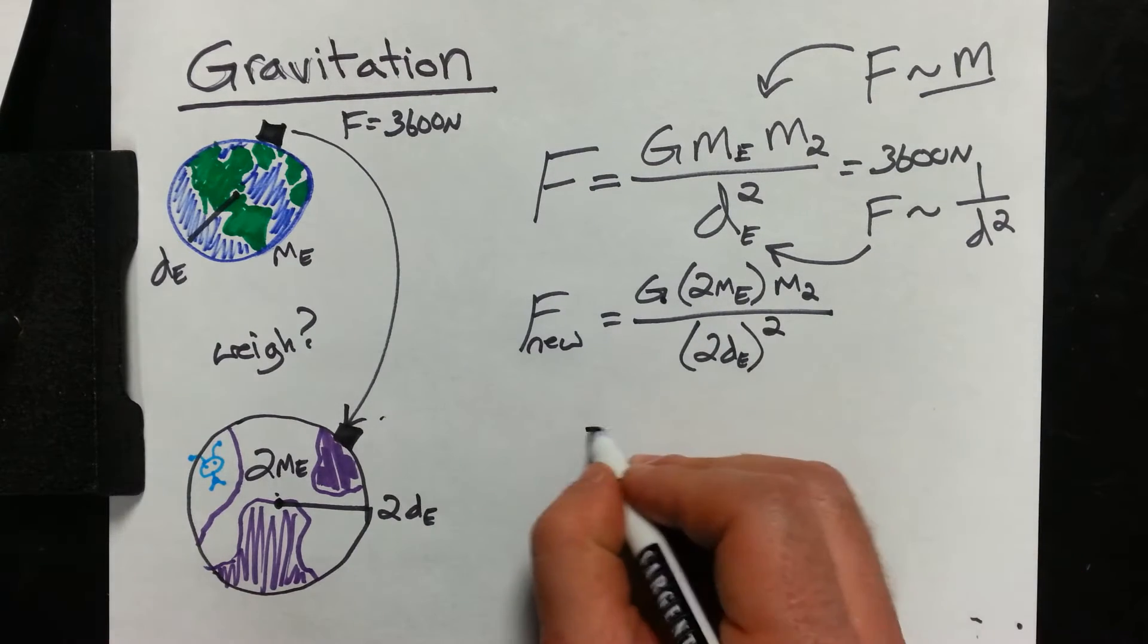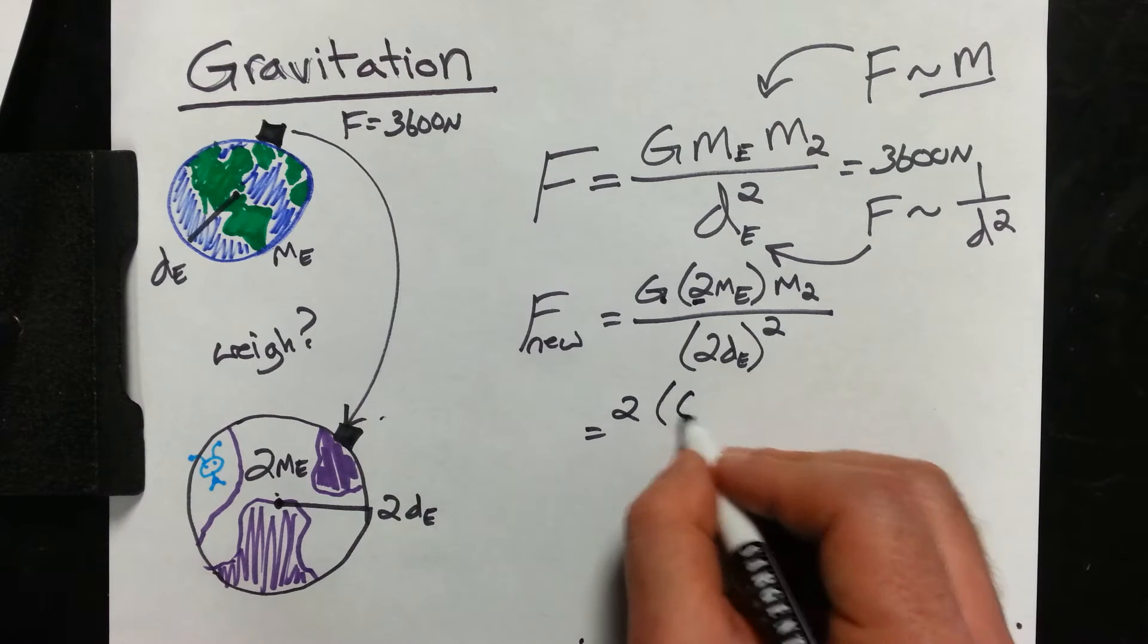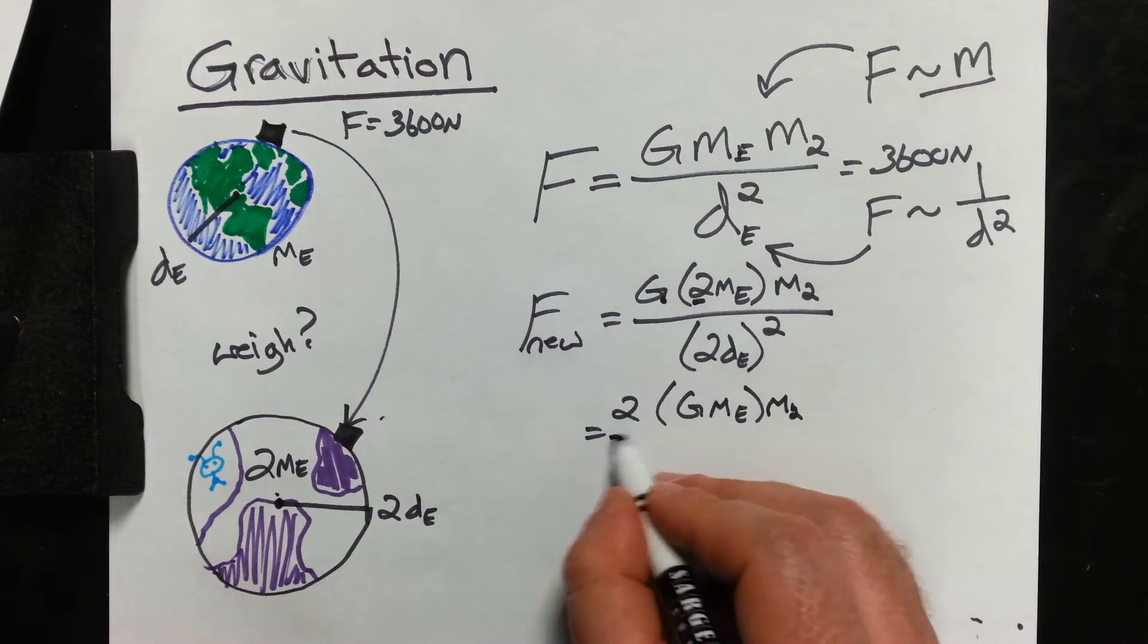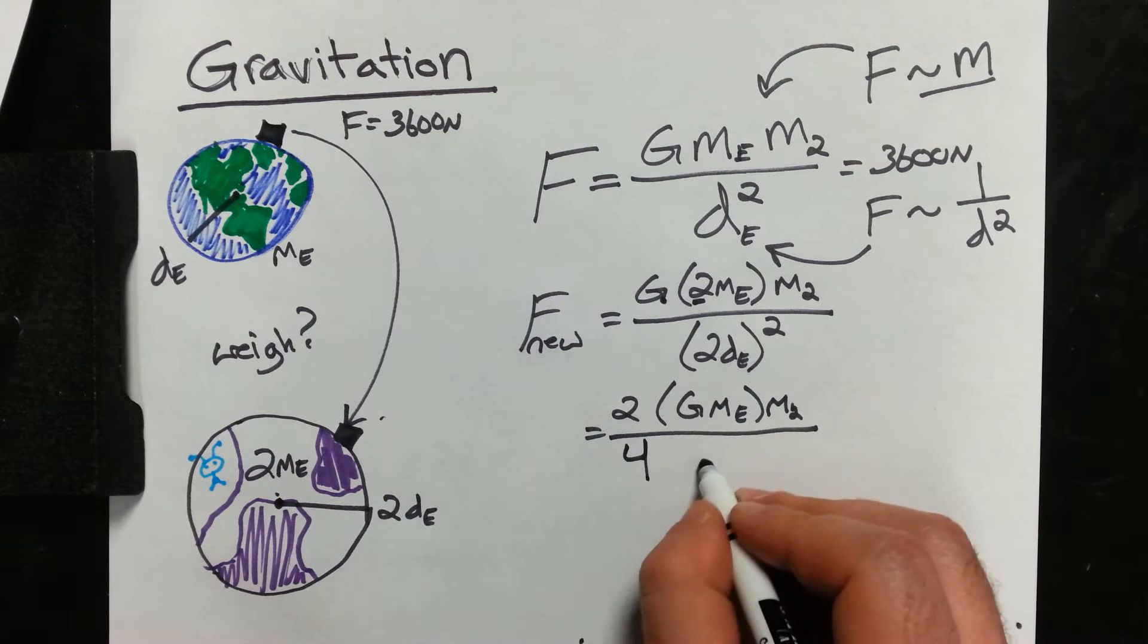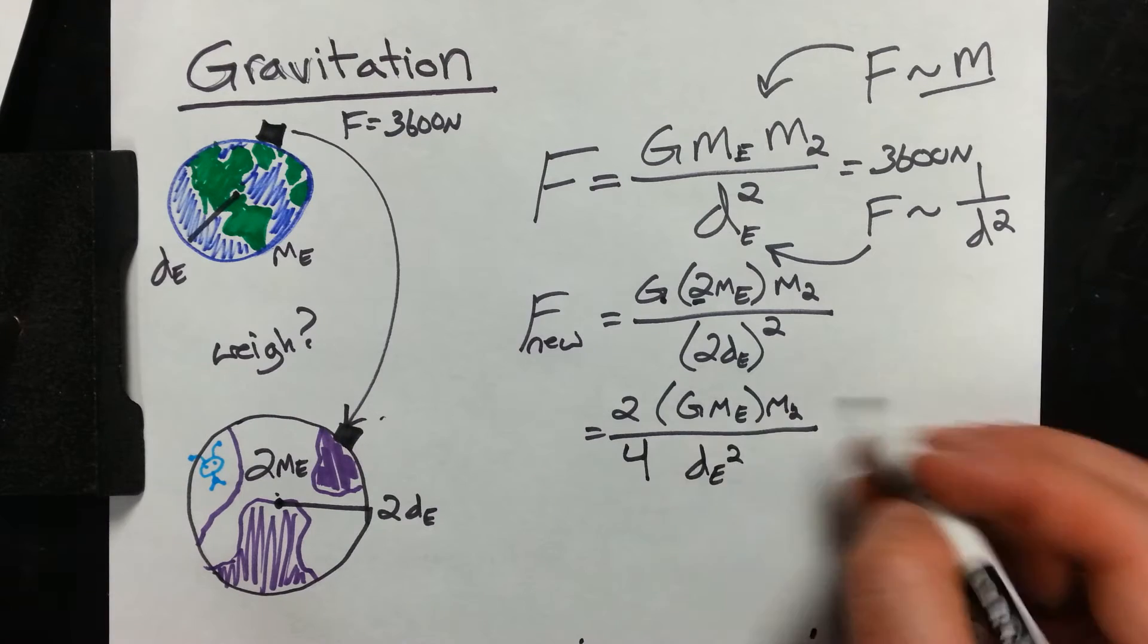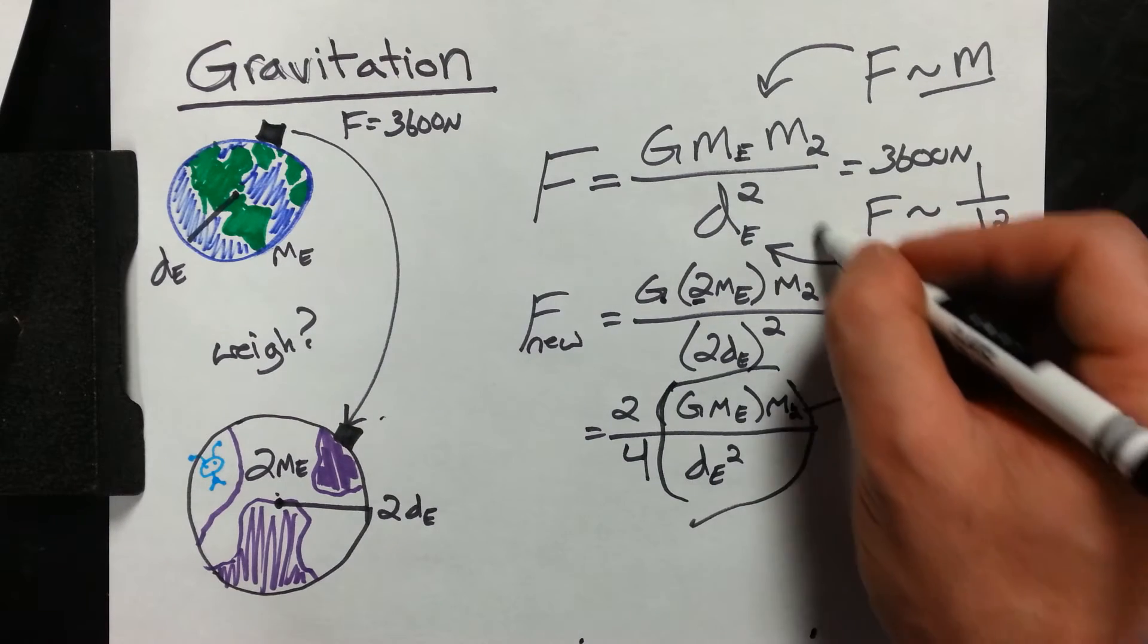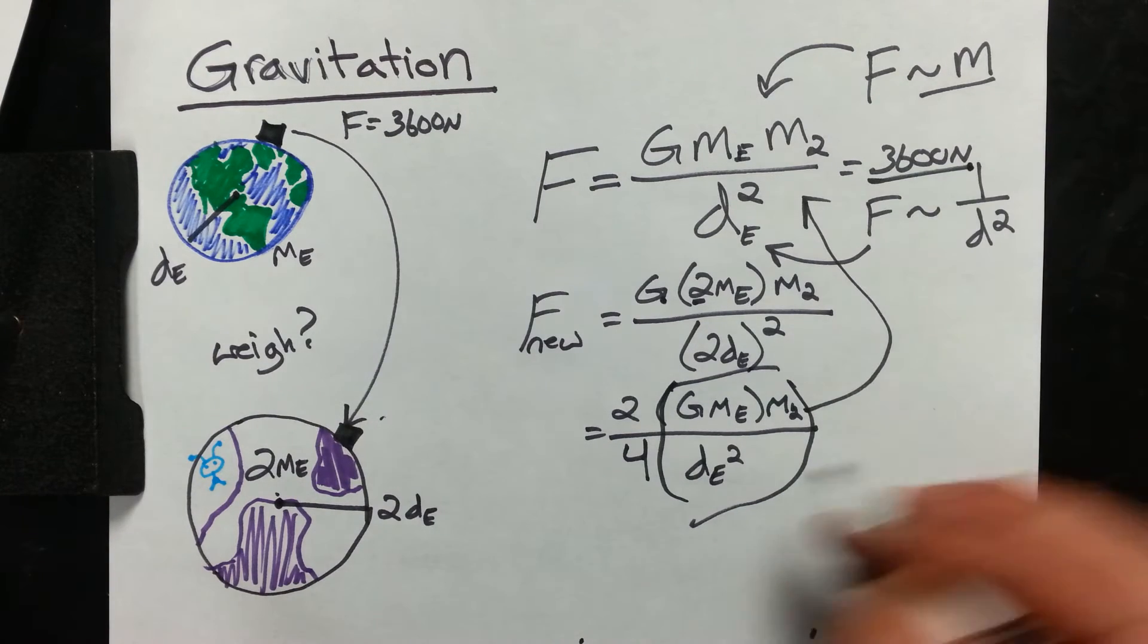So let's rearrange this a little bit. And we just pull this two out front. Two times G, the mass of the Earth, times M2. And I have two squared, which is four, times DE squared. Now this, all of this, is the same as the equation I had before. All of that was 3,600 newtons.